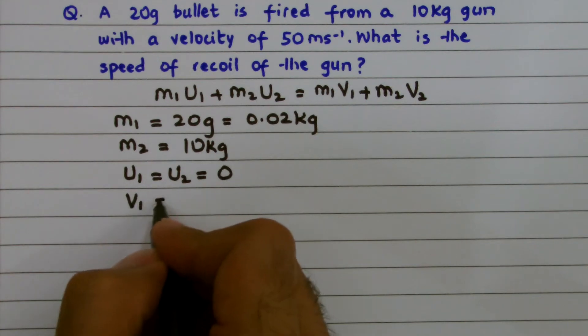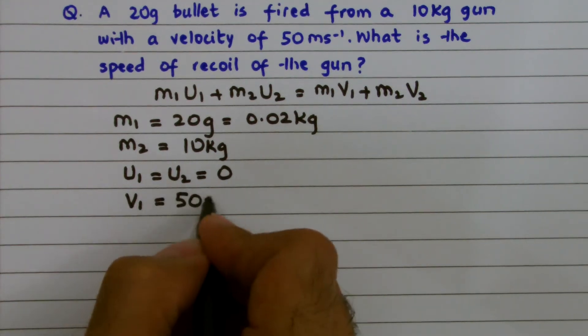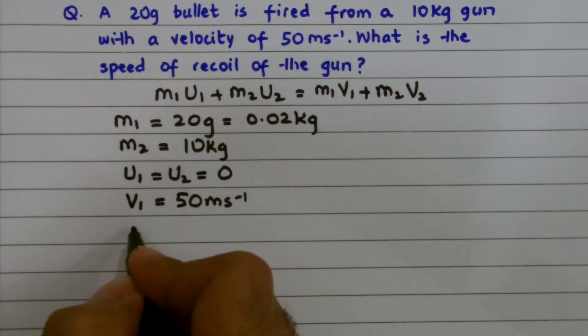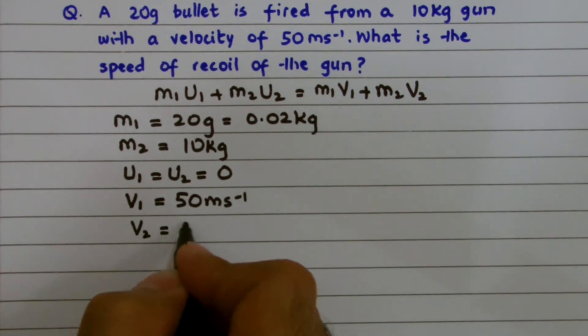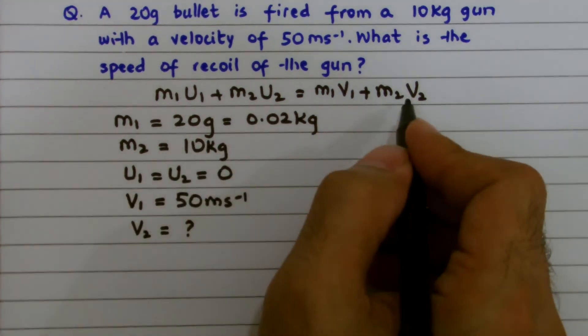V1, the velocity by which the bullet travels is 50 meters per second and we are looking for the recoil of the gun. So let's put the values in the above relation.